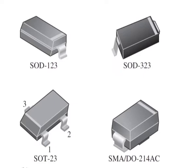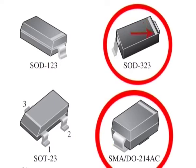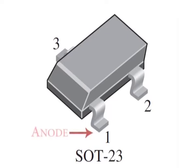Surface mount diode packages shown here are typical diode packages for surface mounting on a printed circuit board. The SOD and SOT packages have gullwing-shaped leads. The SMA package has L-shaped leads that bend under the package. The SOD and SMA types have a band on one end to indicate the cathode. The SOT type is a three-terminal package in which there are either one or two diodes. In a single diode SOT package, pin one is usually the anode and pin three is the cathode. In a dual diode SOT package, pin three is the common terminal and can be either the anode or the cathode.